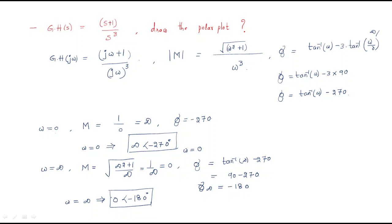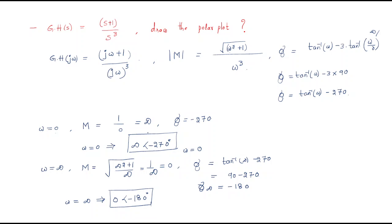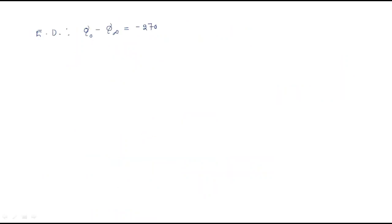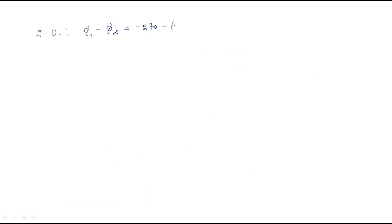The next point to find is the ending direction. The ending direction is determined by: phase at infinite frequency minus phase at zero frequency = −180° − (−270°) = −180° + 270° = −90°. Whenever we get −90°, that is negative, which means anticlockwise direction. So the ending direction is anticlockwise.